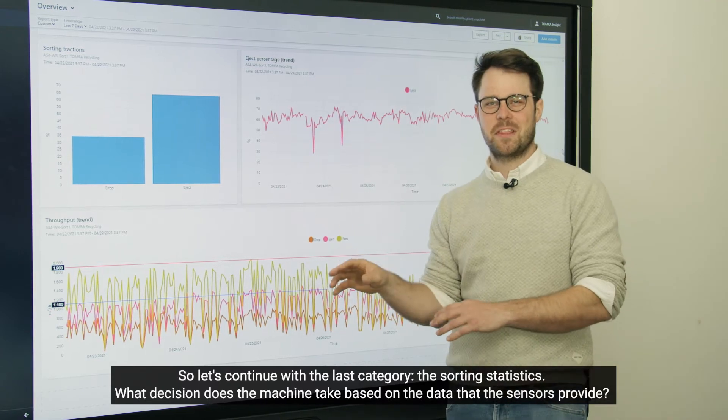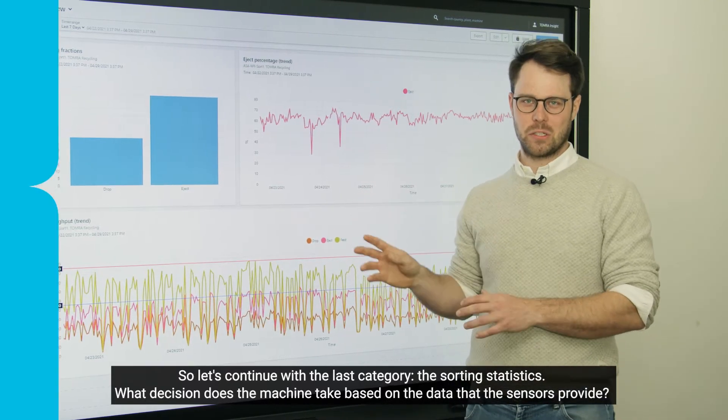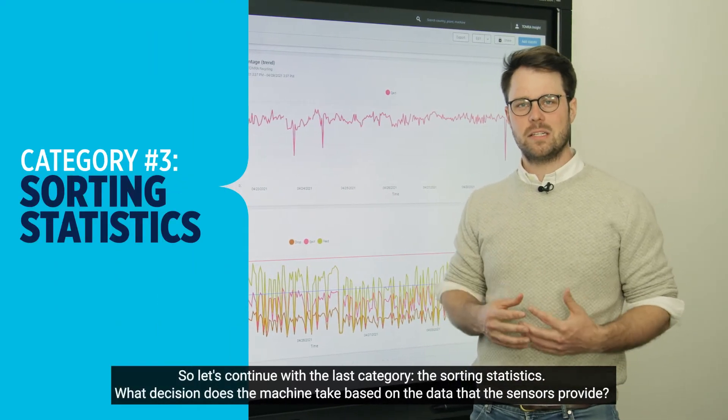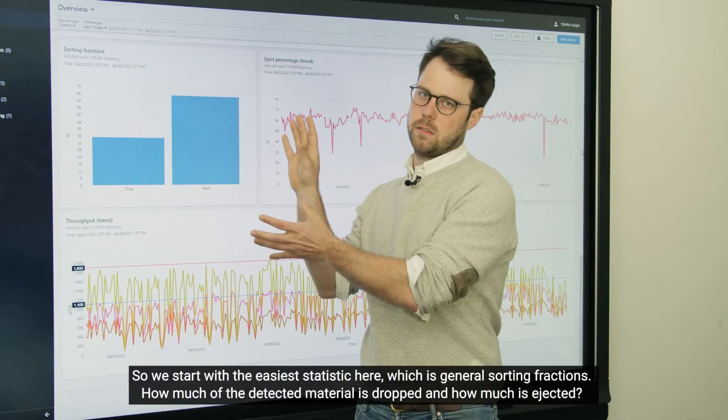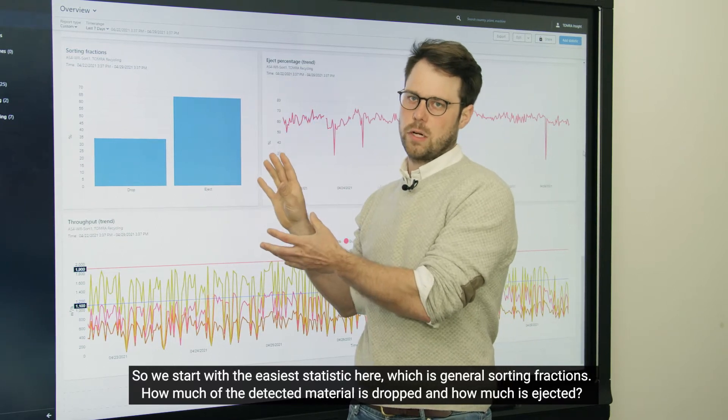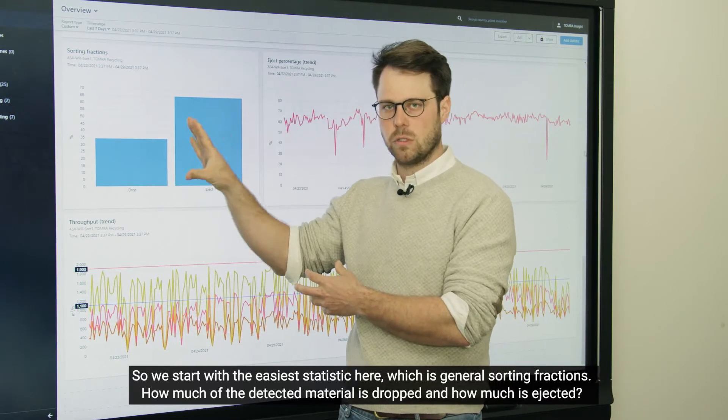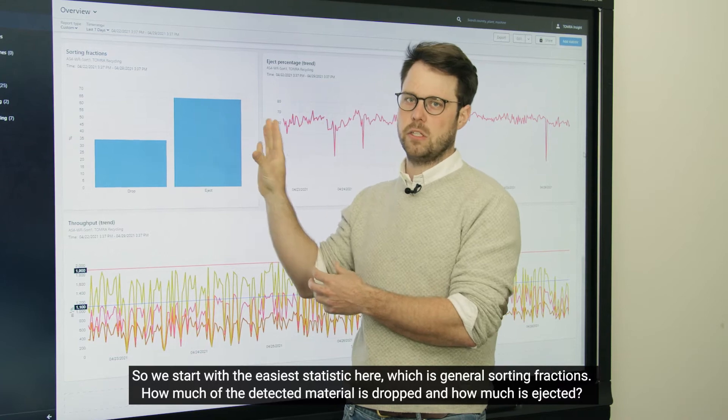So let's continue with the last category: the sorting statistics. What decision does the machine take based on the data that the sensors provide? So we start with the easiest statistic here, the general sorting fractions. How much of the detected material is dropped and how much is ejected?